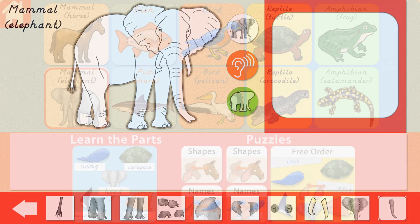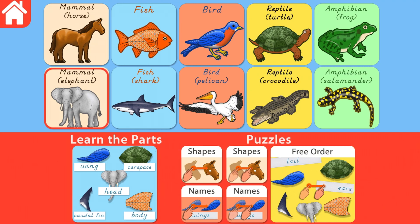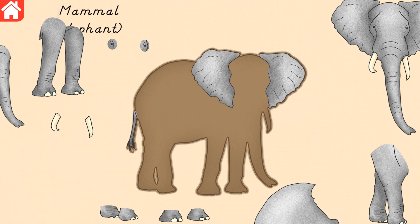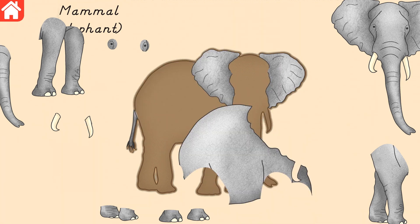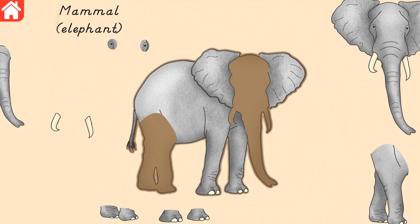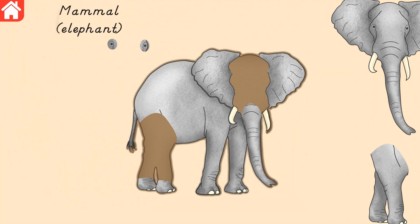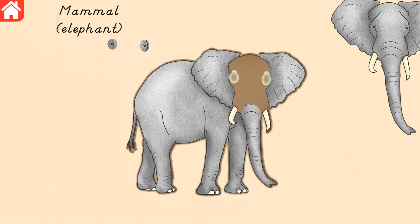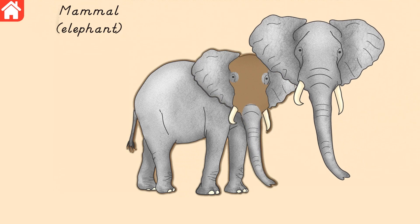Find the animal puzzle piece that matches the blinking image. Tail, ears, body, forelegs, feet, tusks, trunk, hind legs, eyes, head.